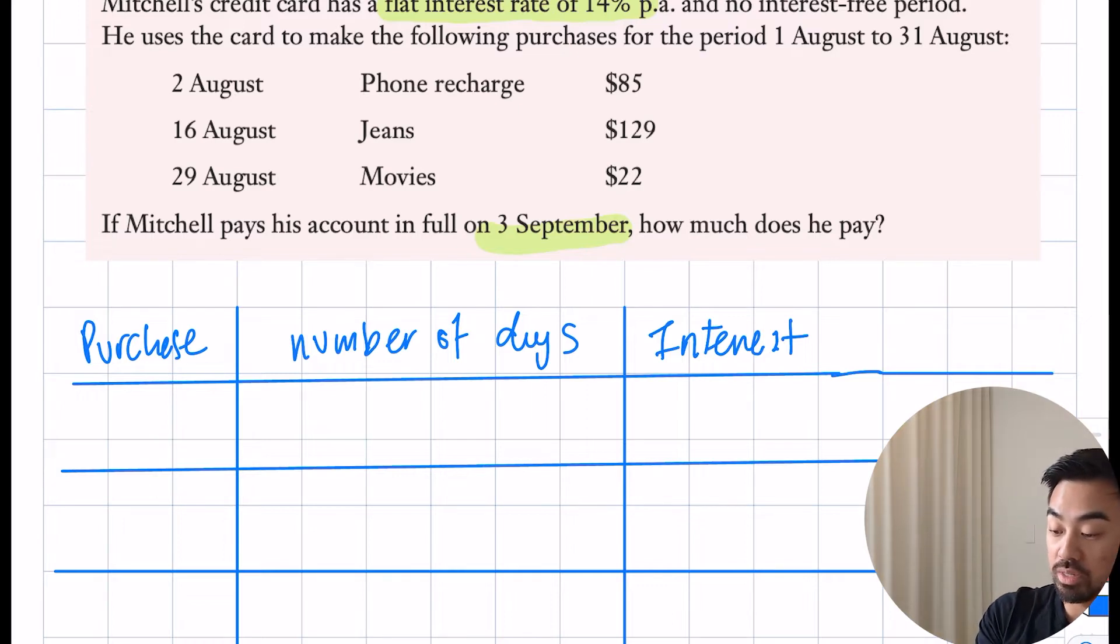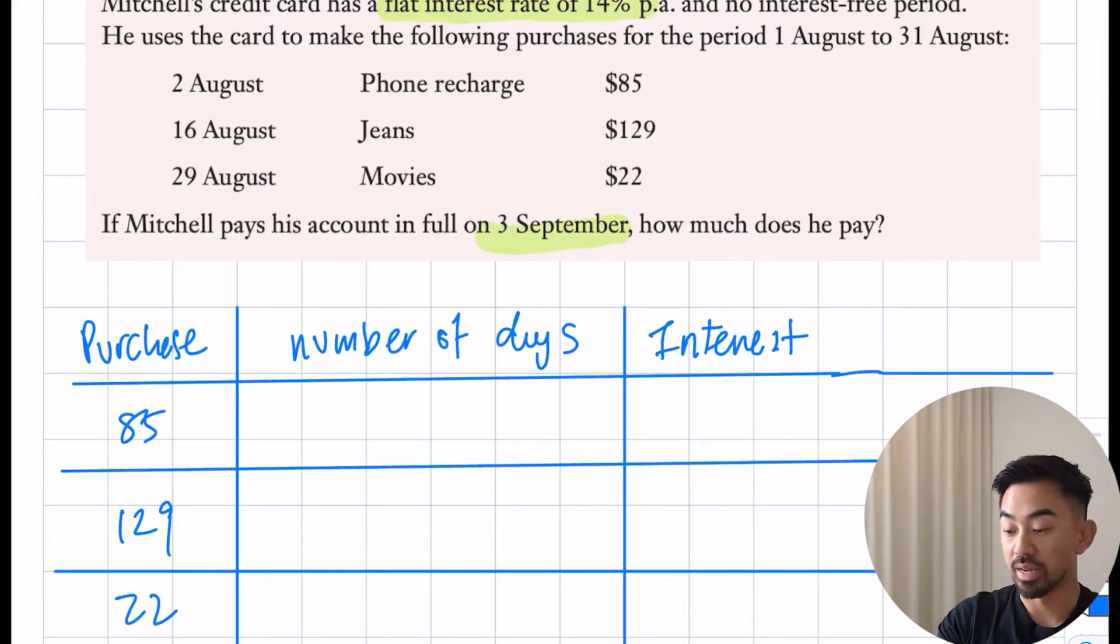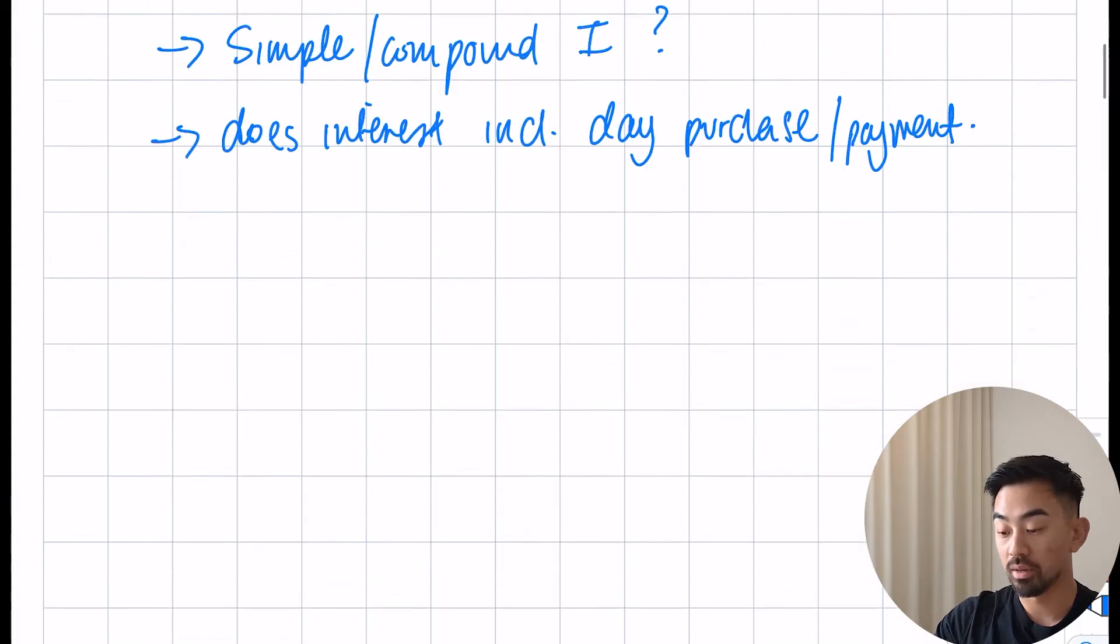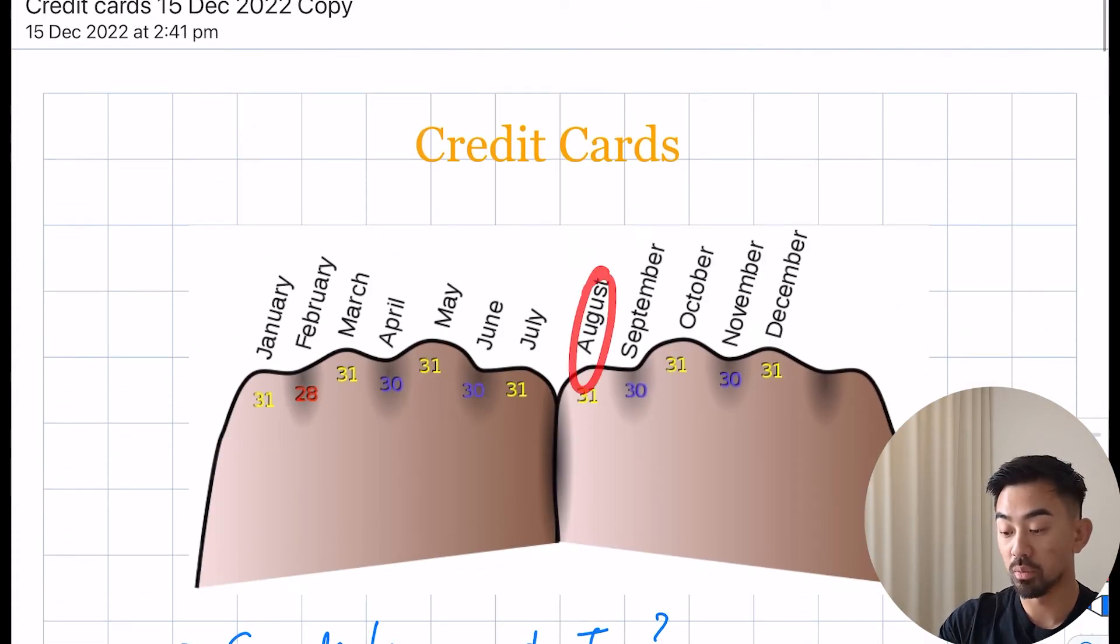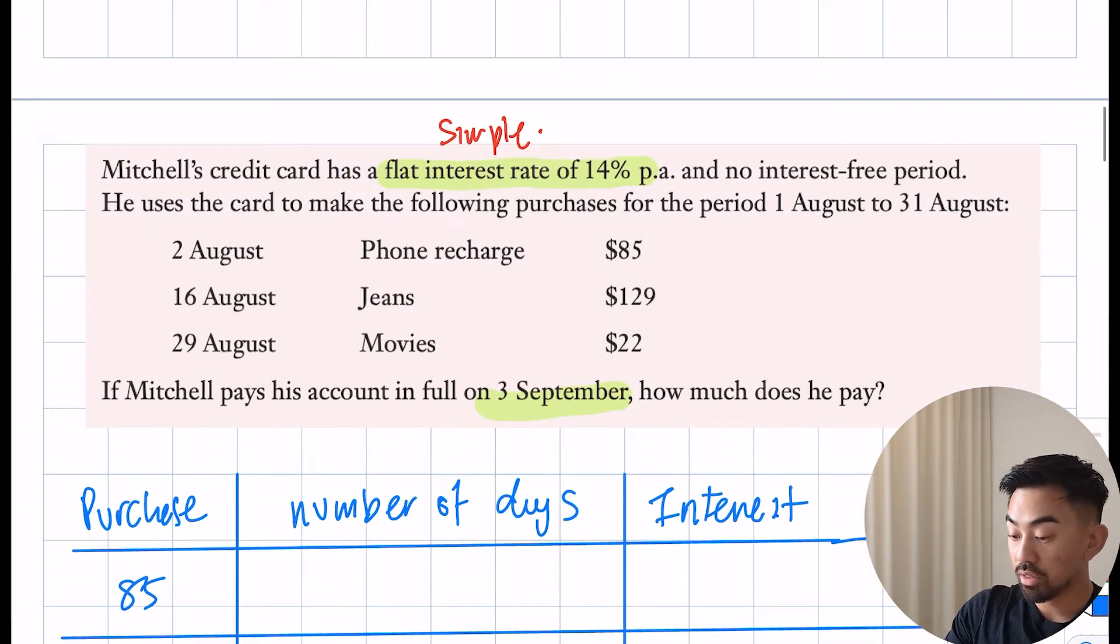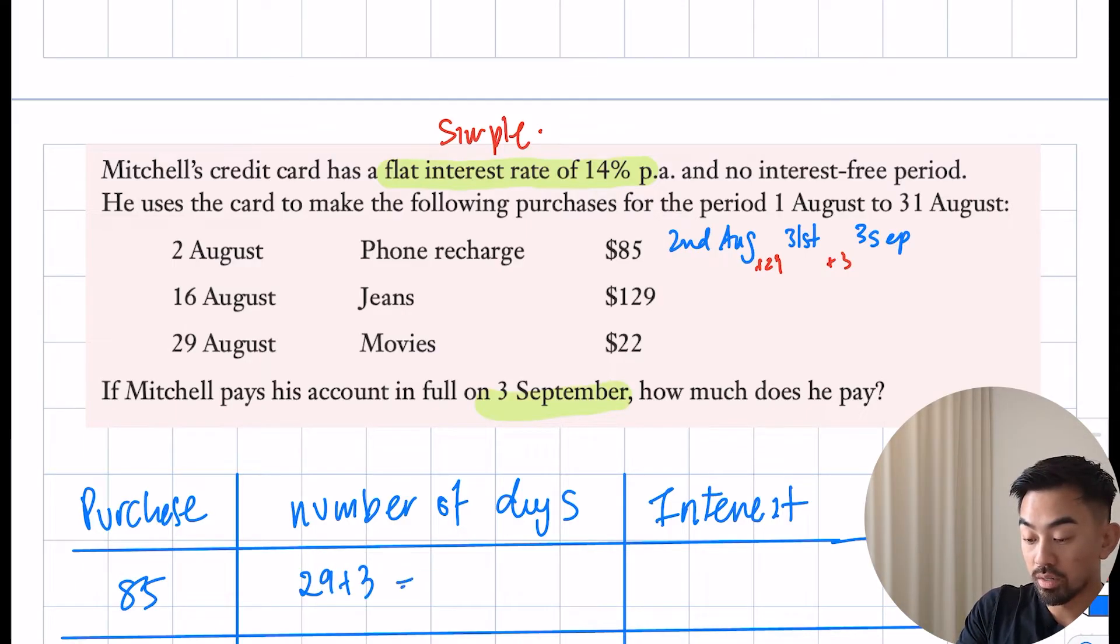If I just work my way down, the purchases are 85, 129, and 22 dollars. For the number of days, I'm trying to work out how many days from the 2nd of August till the 3rd of September. How many days in August? Well, there are 31 days in August. I'm trying to get from the 2nd of August till the 3rd of September. Before I even get there, I need to get to the 31st. Between the 2nd and 31st there's actually 29 days. From the first to the third, that's another three days.